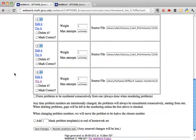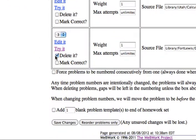Problem 3 is the one we want to delete, so go back to the editor window and just click Delete It. Then, scroll down and click Save Changes.